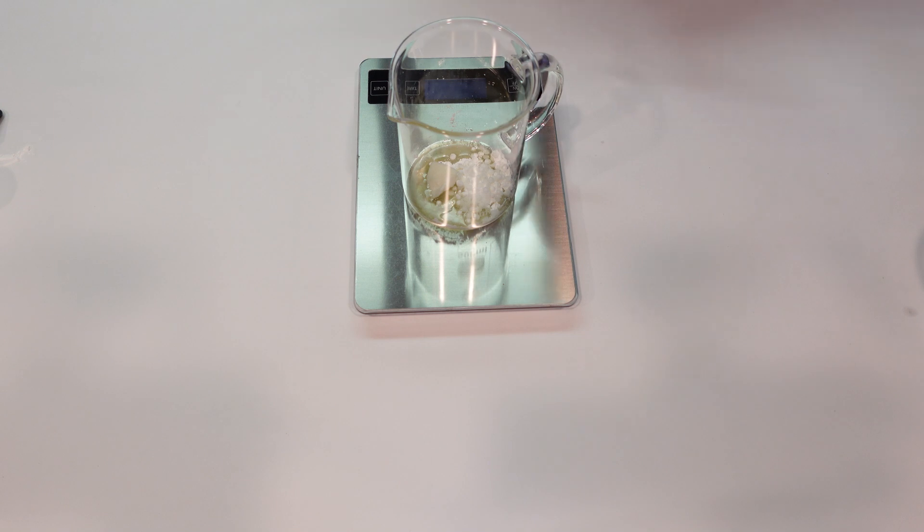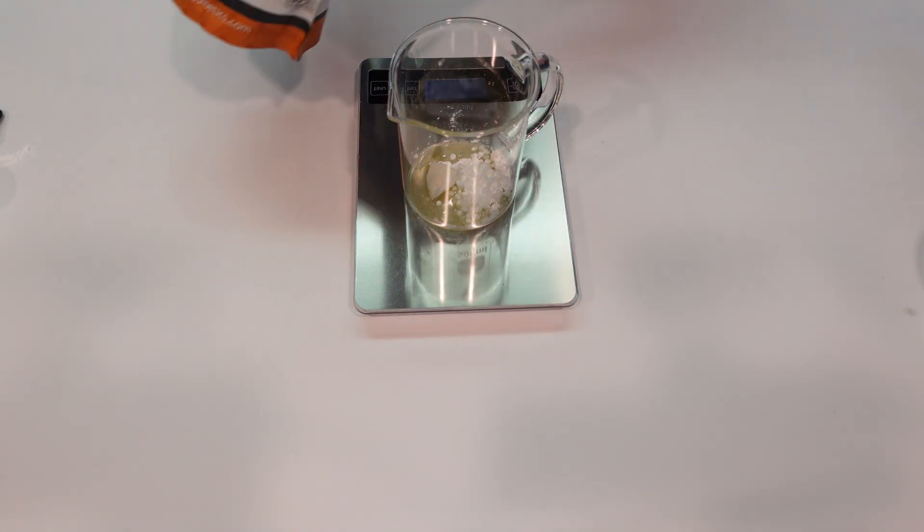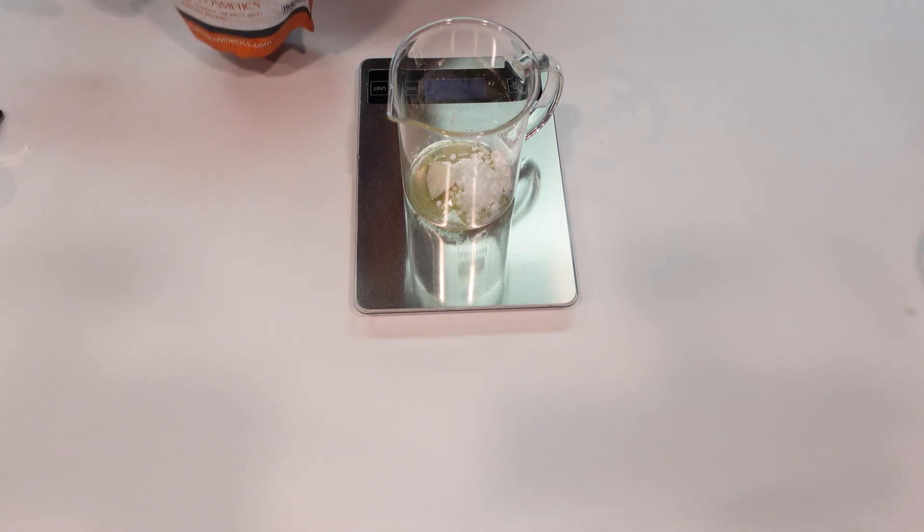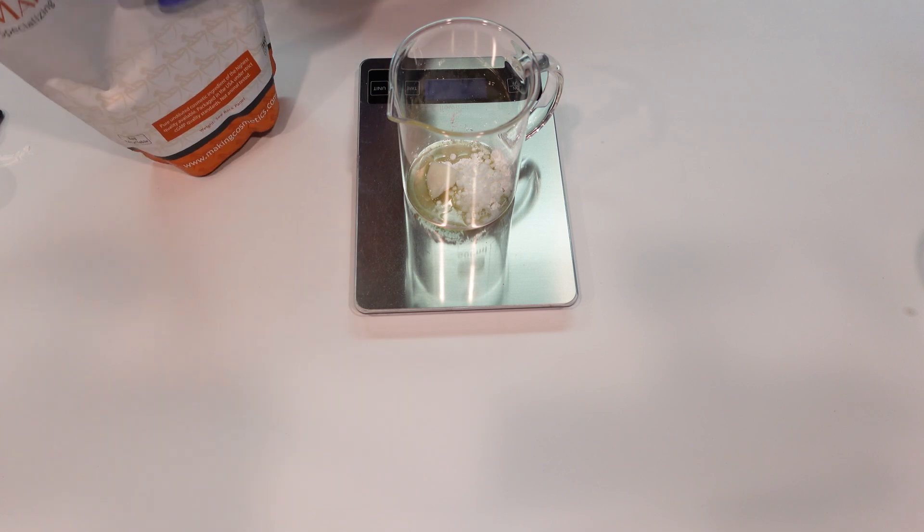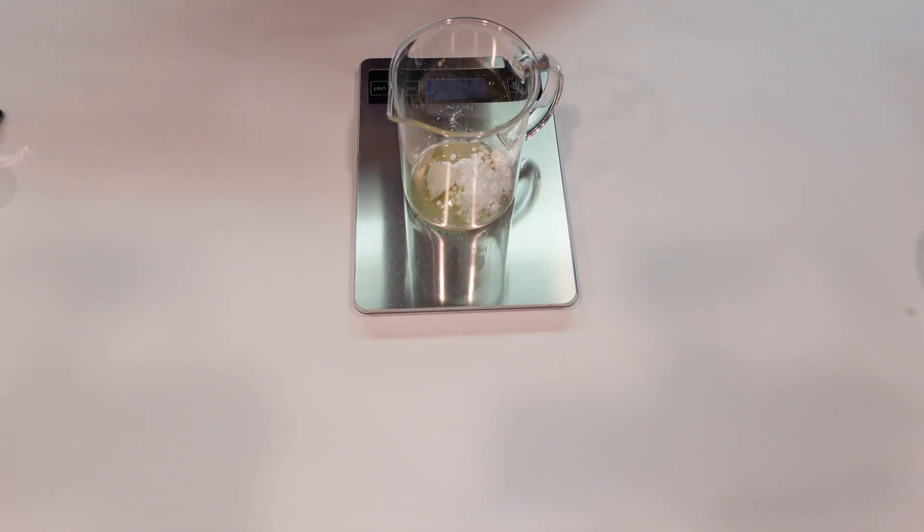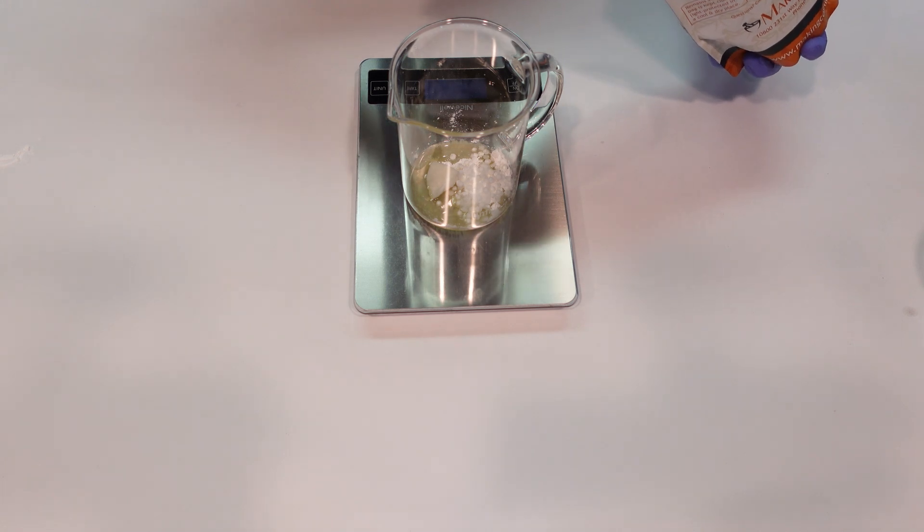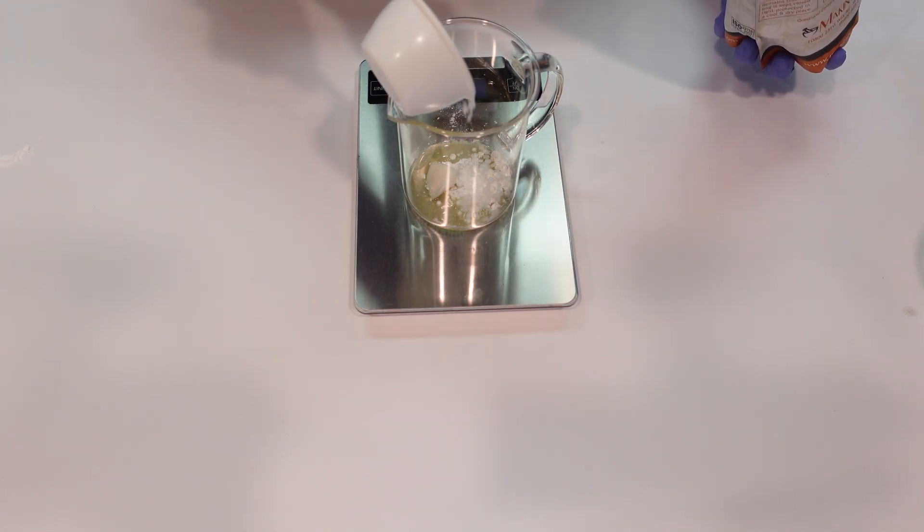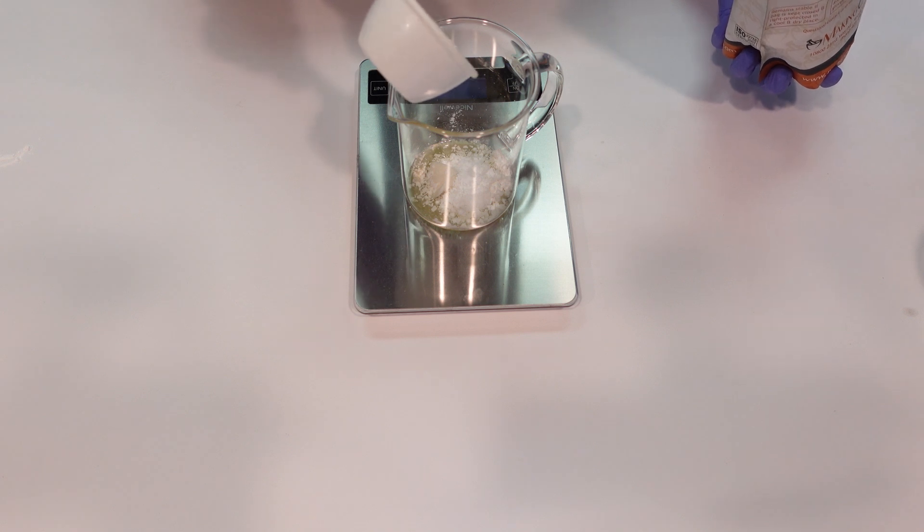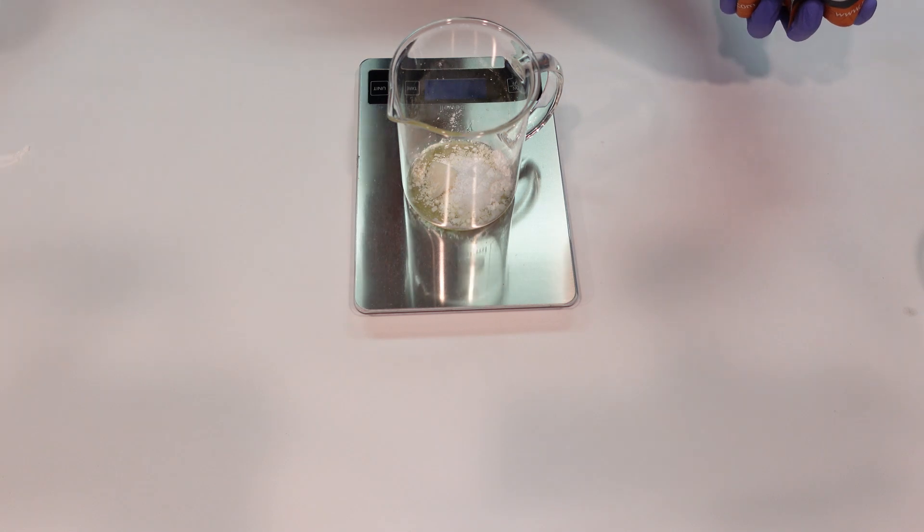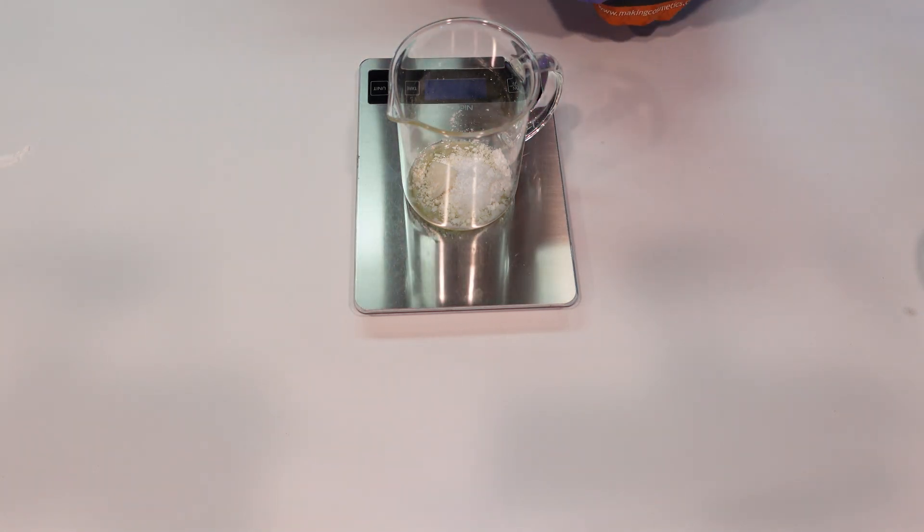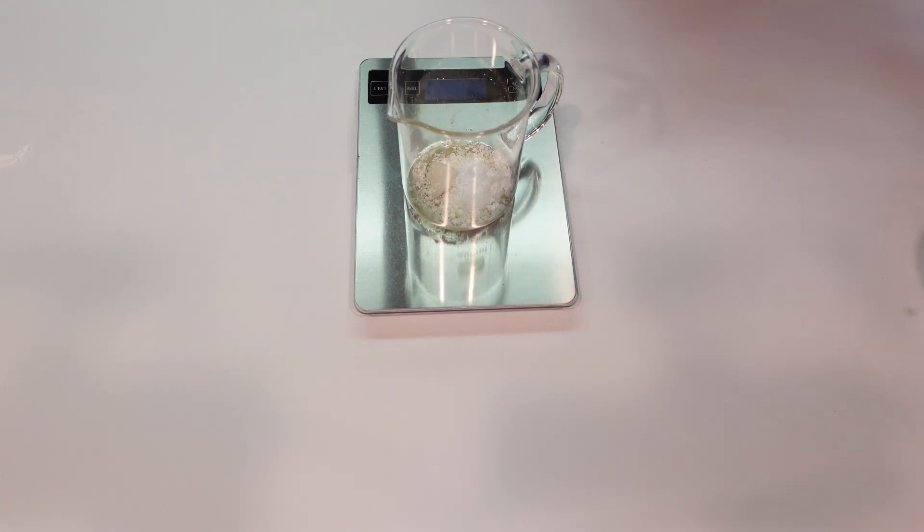And then next up we're going to be adding in some cetyl alcohol. Cetyl alcohol is going to help to thicken up this cream, but it also has a really really nice skin feel. It's going to make this cream feel very silky and just beautiful. It absorbs easily into the skin, so we're going to be using a little bit of cetyl alcohol. You could replace this with stearic acid if you didn't have cetyl alcohol. Stearic acid will add some nice conditioning properties to this formula, however it's not going to feel exactly the same as the cetyl alcohol.